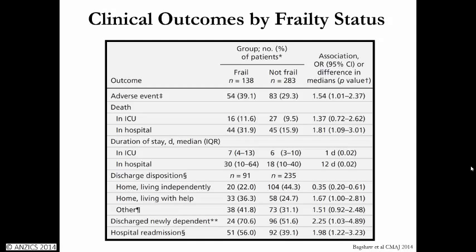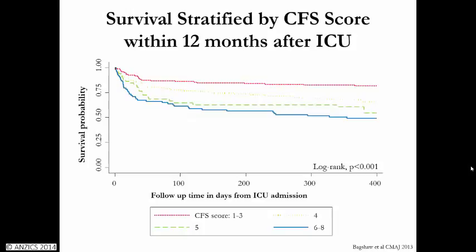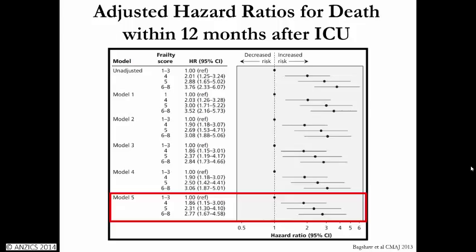Here you can see a Kaplan-Meier survival curve stratified by Clinical Frailty Scale scores — scores 1 to 3 in red, score 4 in those who are vulnerable, score 5 for mild frailty, and 6 to 8 for greater severities of frailty. There is a clear dose-response gradient with risk of death over the subsequent 12 months associated with worsening state of frailty. In an adjusted hazards model controlling for age, sex, baseline comorbidity, illness severity, case mix, and type of institution, the same biologic gradient persists — a worsening degree of frailty was associated with increased hazard of death through 12 months.